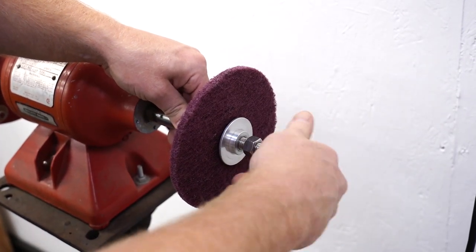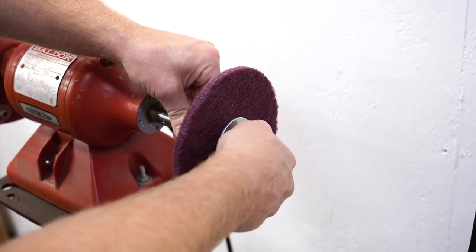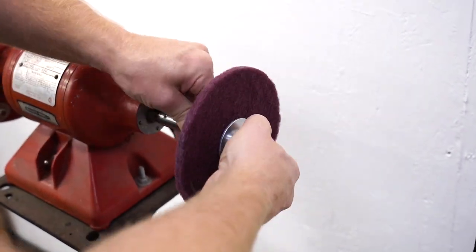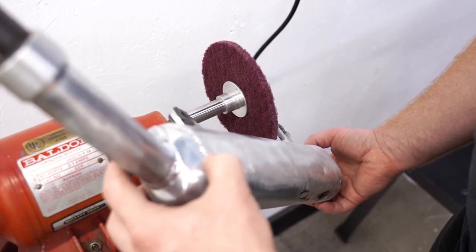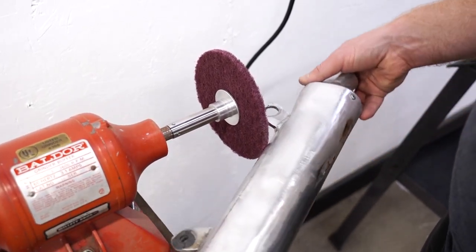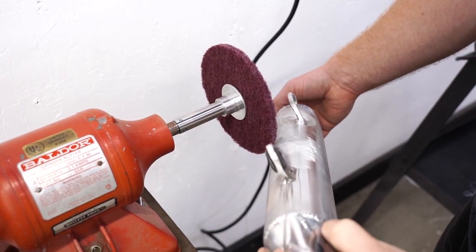The extender makes compared to when we have this wheel mounted just on the machine shaft. Now you can see with this extender, it's no problem getting in the tighter areas. You can maneuver the part all around, not hitting the machine at all.